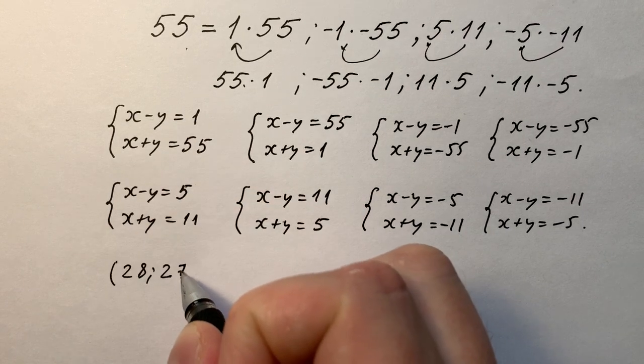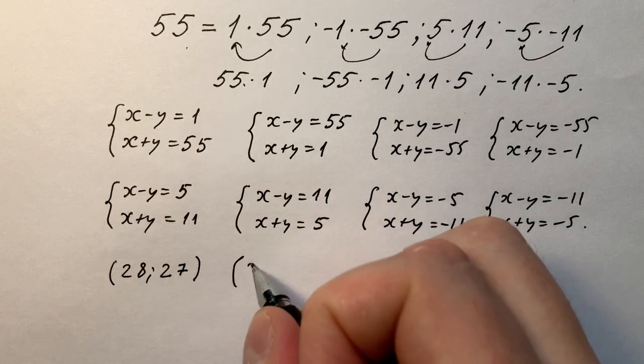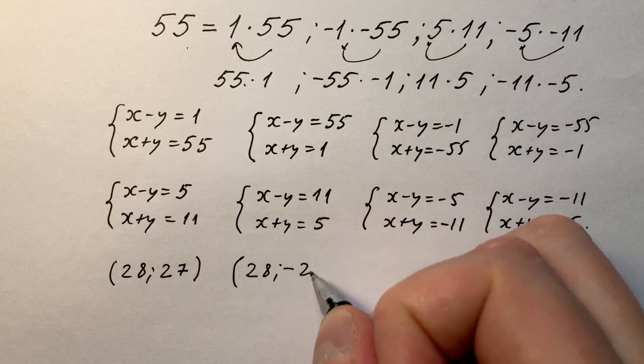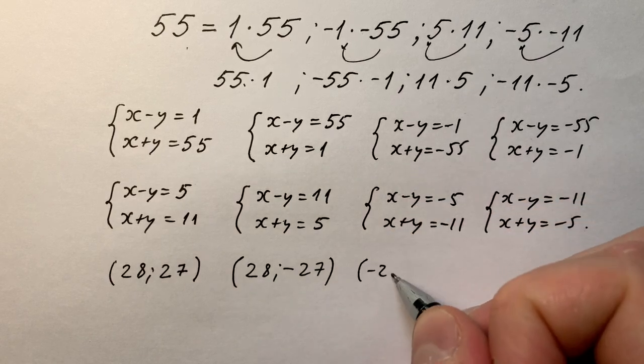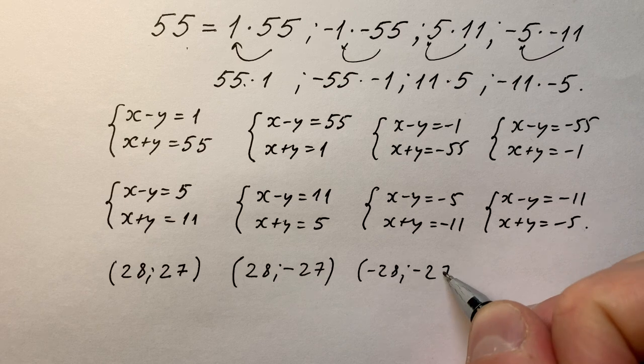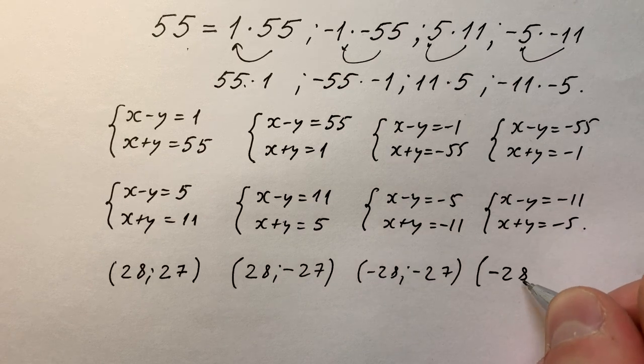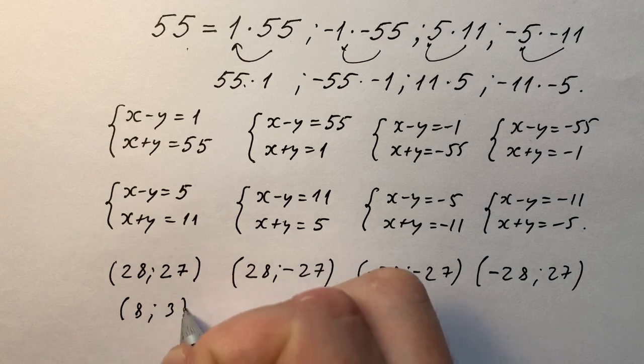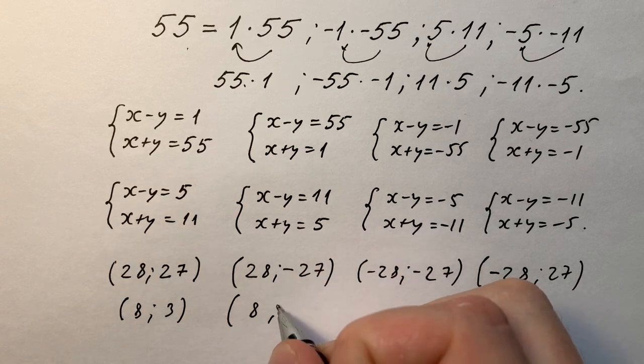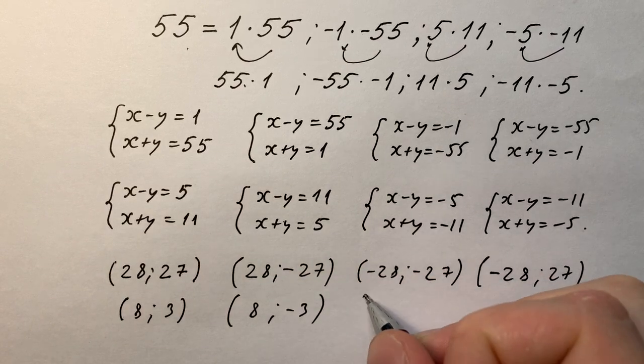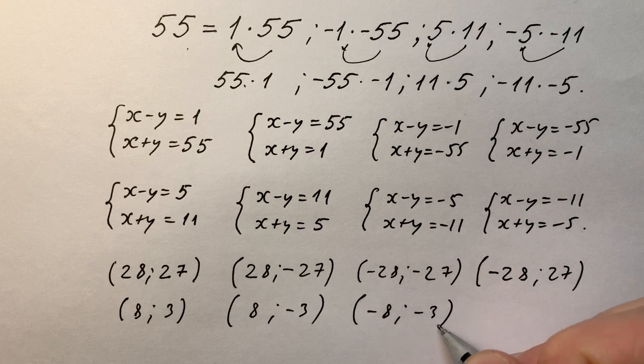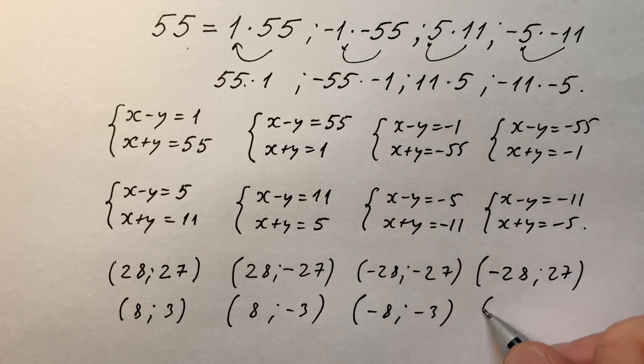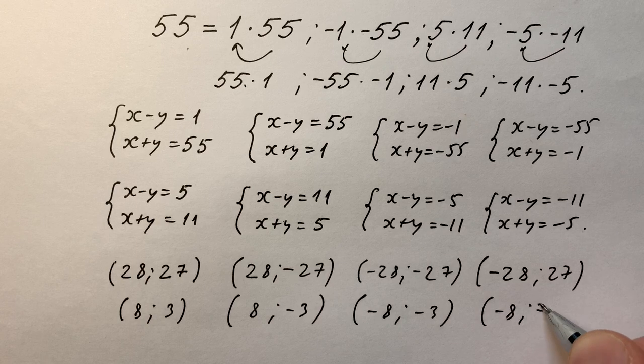And here are they. First system: x = 28, y = 27. Second: x = 28, y = -27. Third: x = -28, y = -27. Fourth: x = -28, y = 27. Fifth: x = 8, y = 3. Sixth: x = 8, y = -3. Seventh: x = -8, y = -3. And the last one, eighth: x = -8, y = 3.